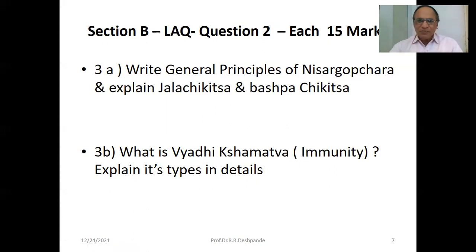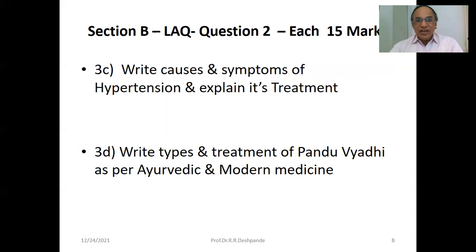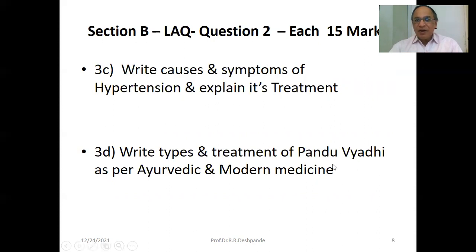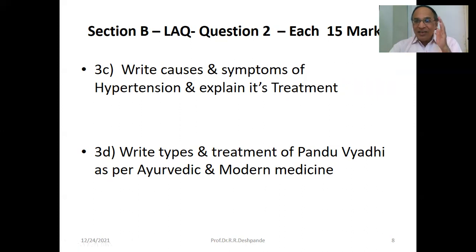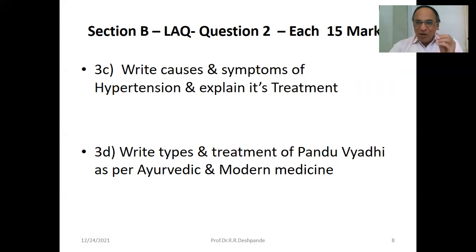Active and passive — different types are there. Write causes and symptoms of hypertension — I have a video on hypertension, very interesting, please look for that — and explain its treatment. Write types and treatment of Pandu Vyadhi as per Ayurvedic and modern medicine. Pandu Vyadhi is treated with Ghrita in Ayurveda — Darvyadi Ghrita is the best for anemia. Lohasava will be there, Tapyadi Lohavati will be there, and modern iron supplements, B-complex supplements, and protein supplements will be there.